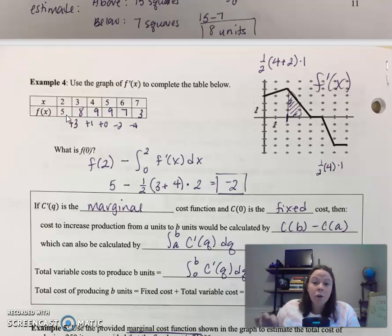So you actually know an ordered pair on the original function. So you're going to build off of that. So to get from two to three, we're going to add the area under the derivative. See how it's the derivative graph? So we're going to add the area under our derivative to get the total change on the original function.